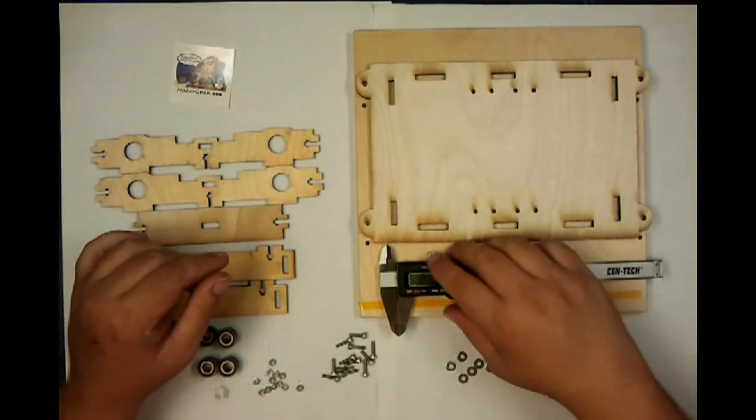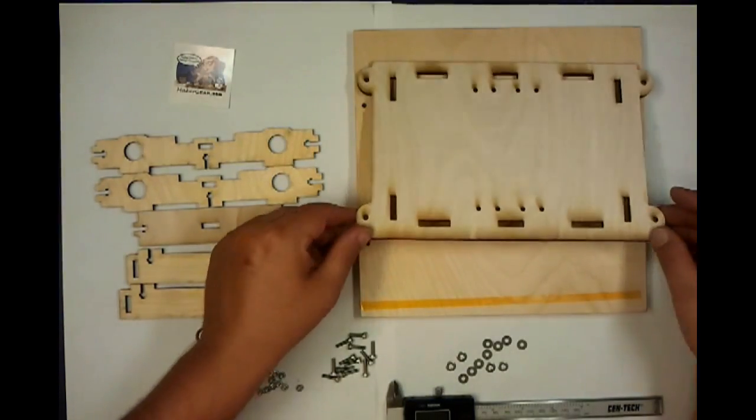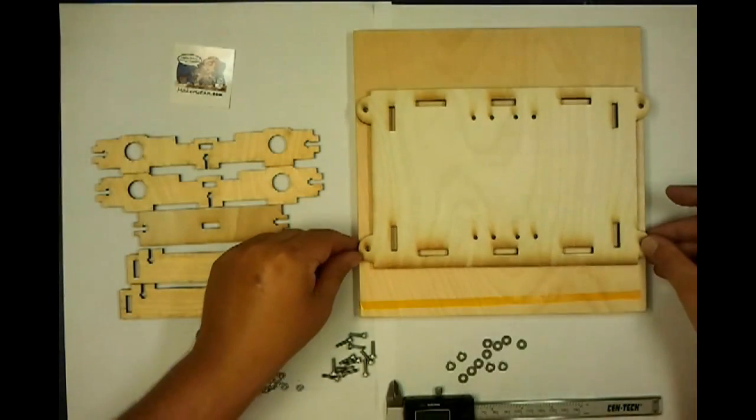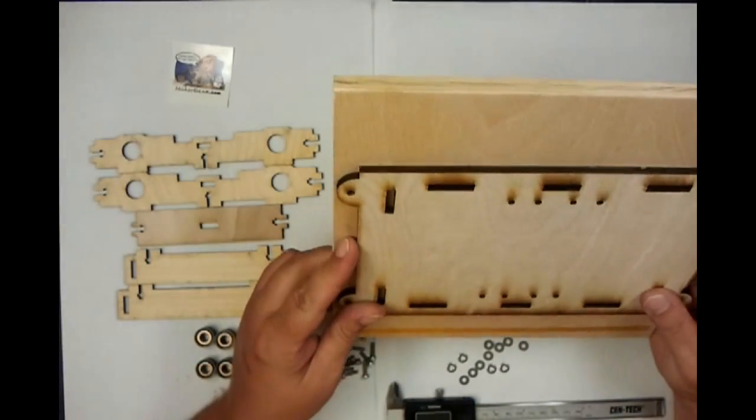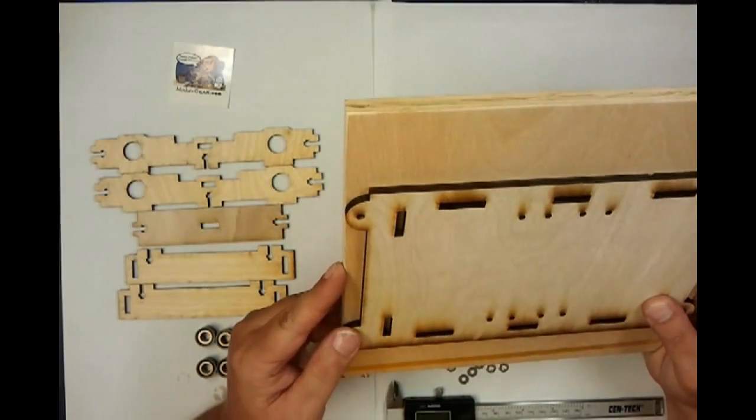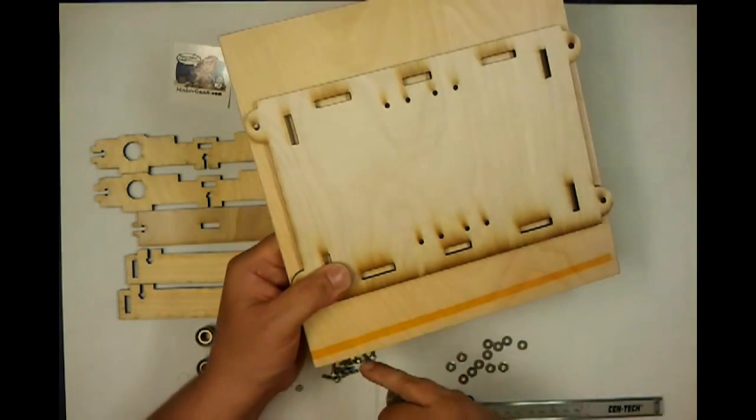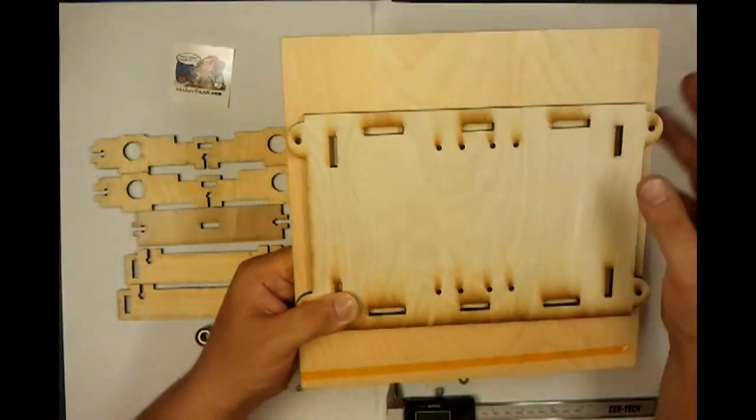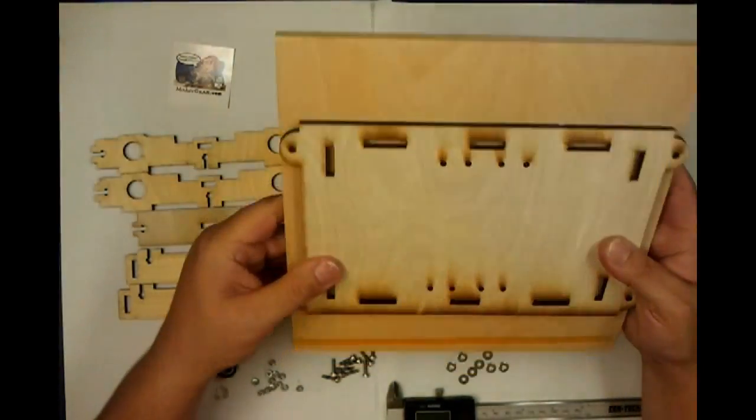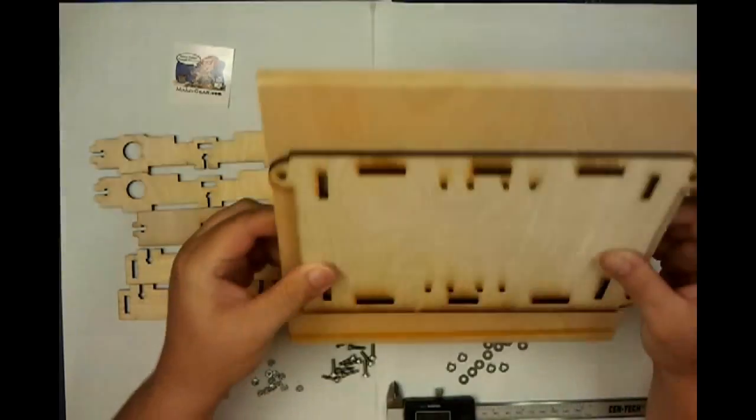Before we started, I went ahead and drilled my holes through this, which is the top plate of the Y-axis. You drill four holes. You want this to be as centered as possible, so what I did was I ended up measuring 46 millimeters off each side. Got it centered, taped it down, and drilled a quarter inch hole through both sides.